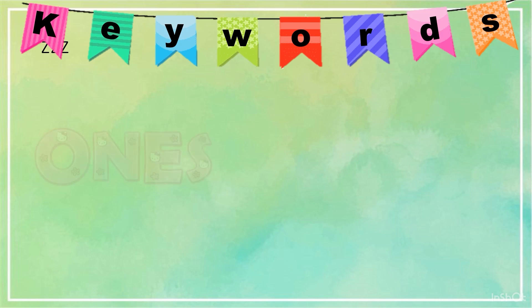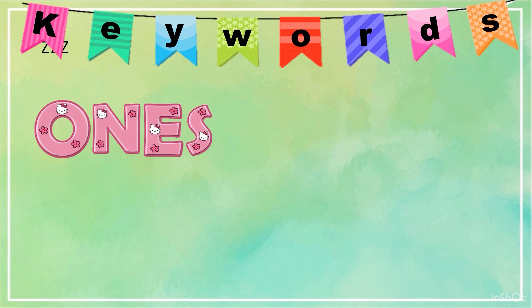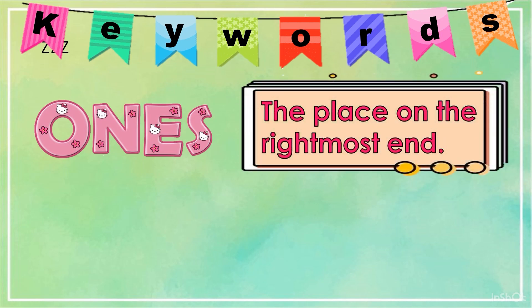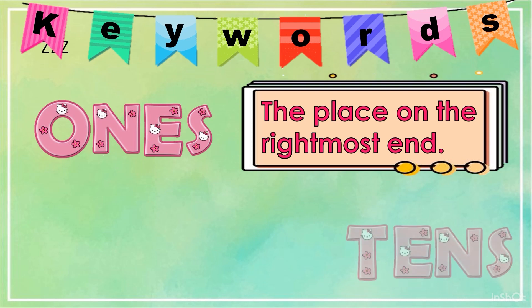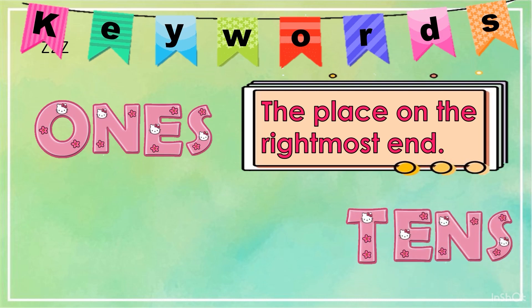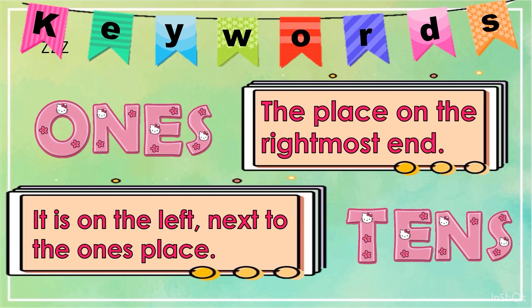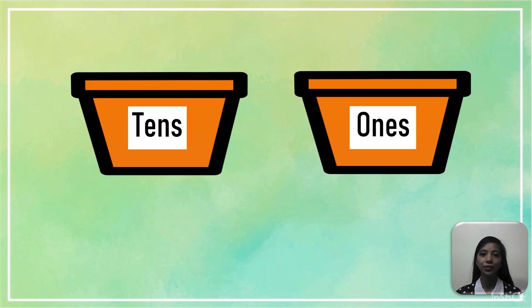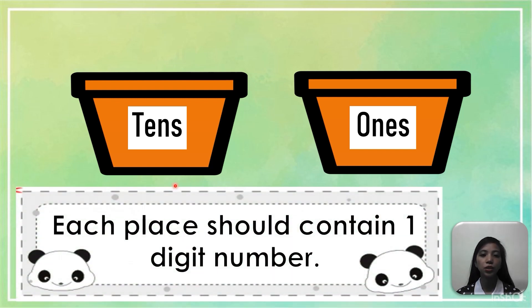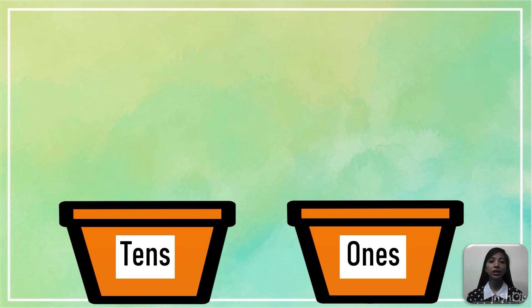The first keyword we have is 1s. 1s means the place on the rightmost end. Next, we have 10s. When we say 10s, it is on the left next to the 1s place. So here's the 1s place, and then here's the 10s place. Always remember that each place should contain one digit number. In the 1s place, these are the numbers and values that have one digit.